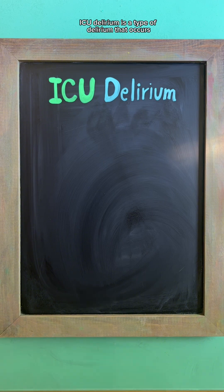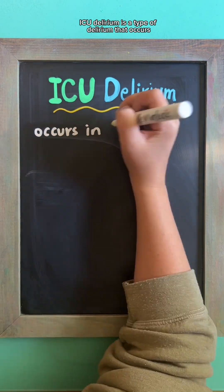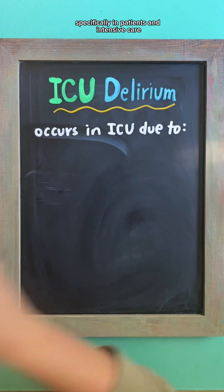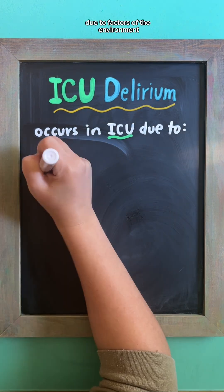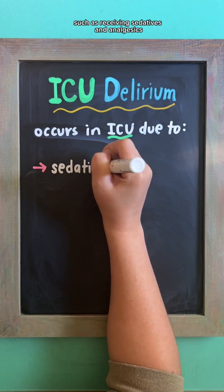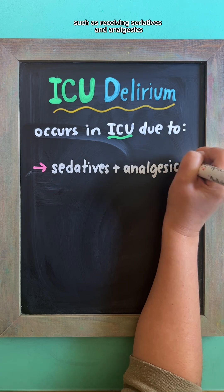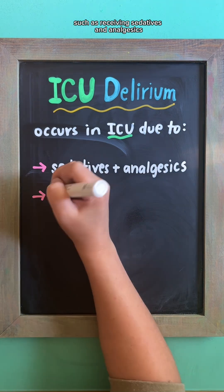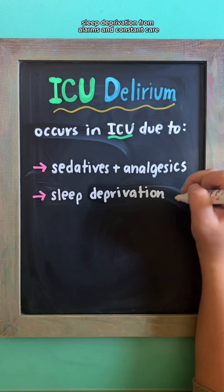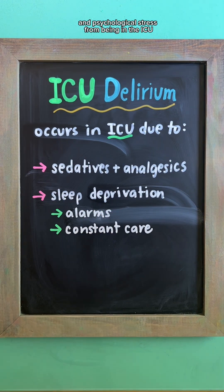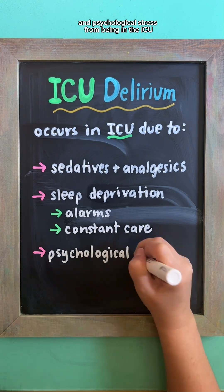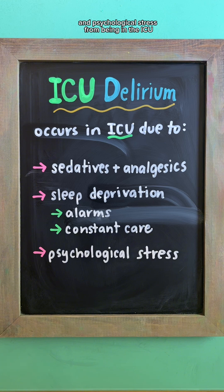ICU delirium is a type of delirium that occurs specifically in patients in intensive care due to environmental factors such as receiving sedatives and analgesics, sleep deprivation from alarms and constant care, and psychological stress from being in the ICU.